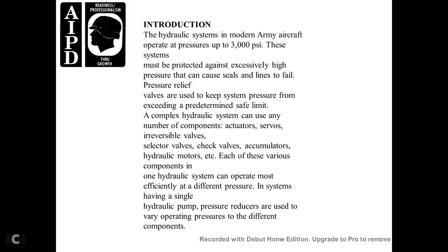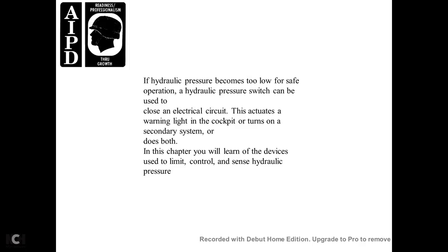Complex hydraulic systems can use any number of components — actuated servos, irreversible valves, selector valves, check valves, accumulators, hydraulic motors, etc. Each of the various components in one hydraulic system can operate most efficiently at different pressures. Pressure reducers allow a single hydraulic pump to supply varying operating pressures to different components. If hydraulic pressure becomes too low for safe operation, a hydraulic pressure switch can be used to close an electrical circuit, activating a warning light in the cockpit, turning on a secondary system, or taking other action.